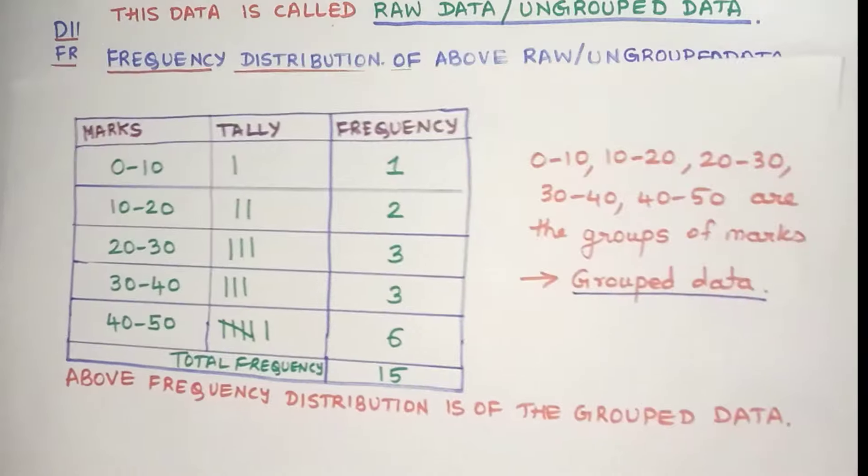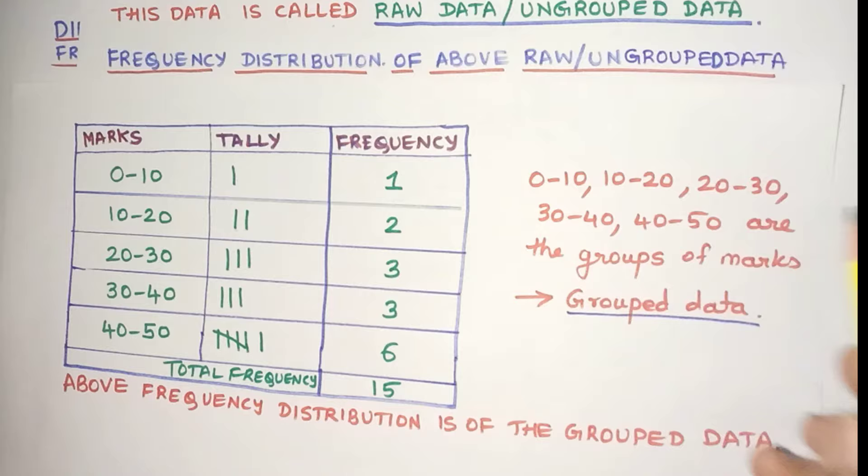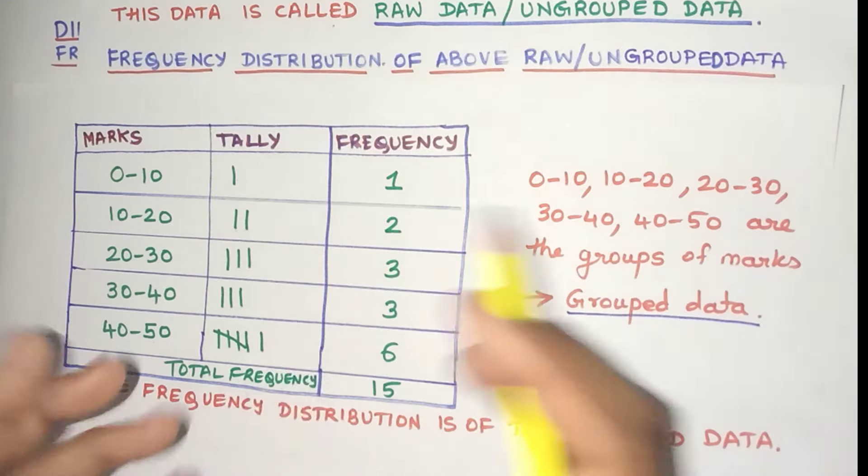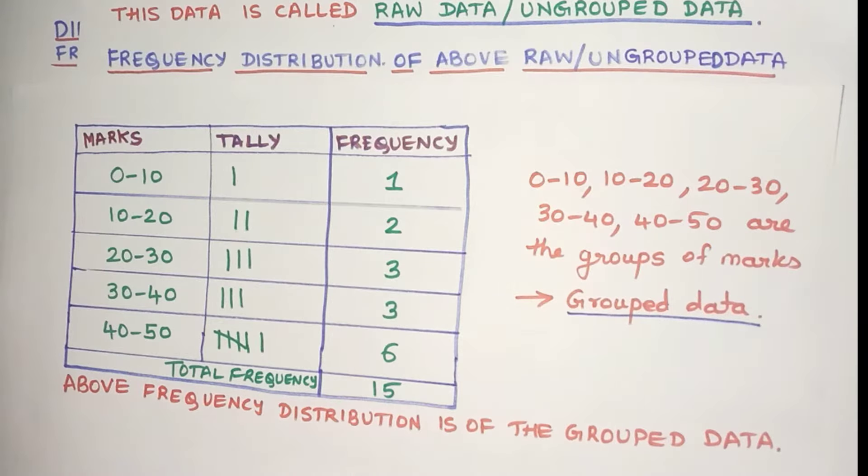So in this case, we choose convenient groups: 0 to 10 marks, 10 to 20 marks, 20 to 30 marks and so on. And we make groups of the data. That's why this type of data is known as grouped data.